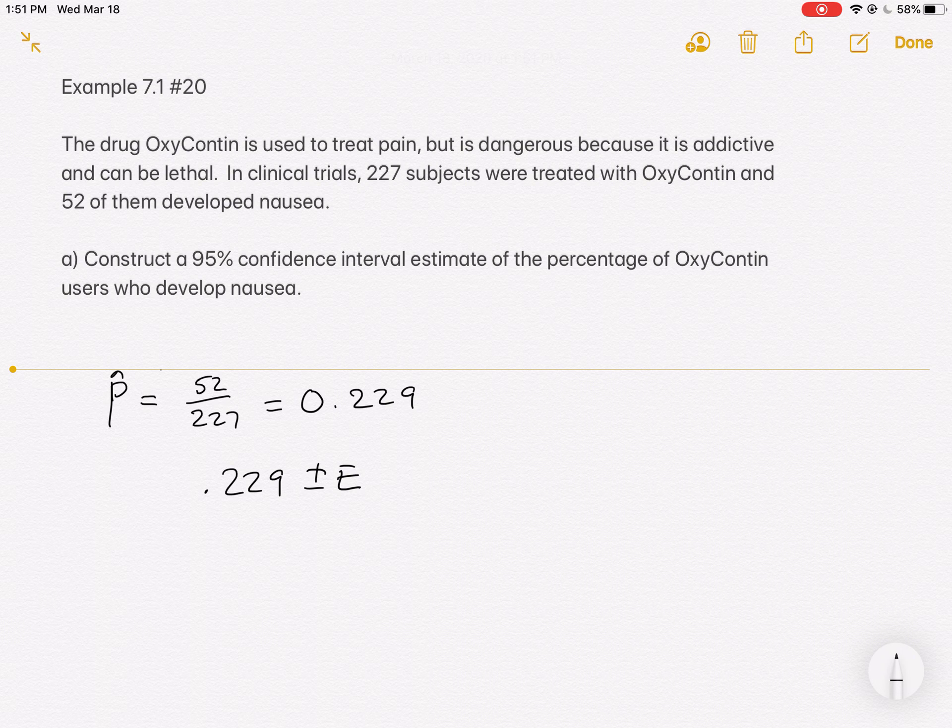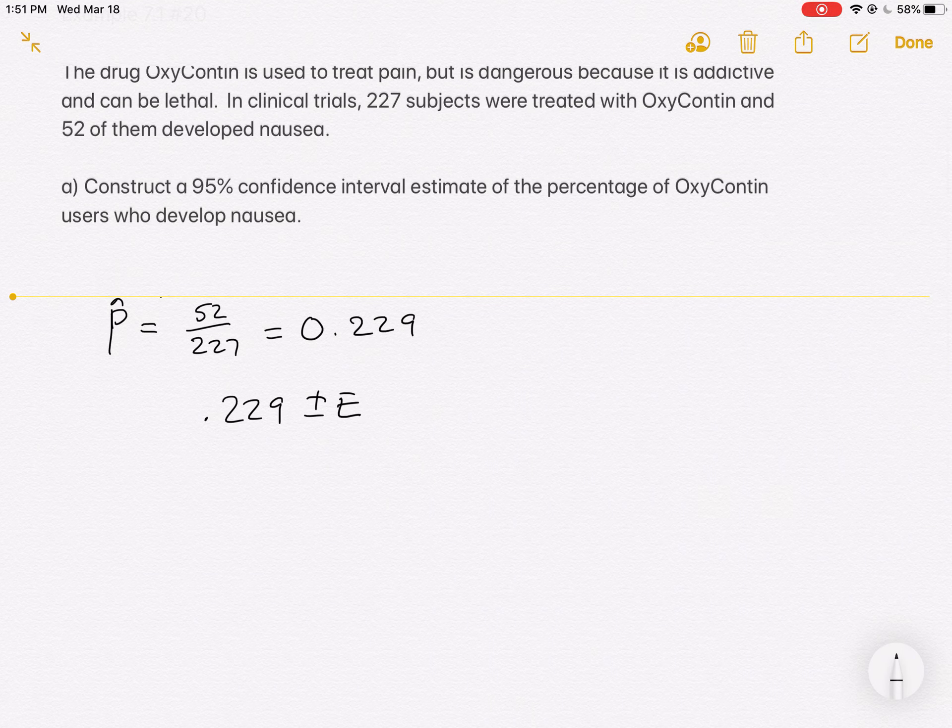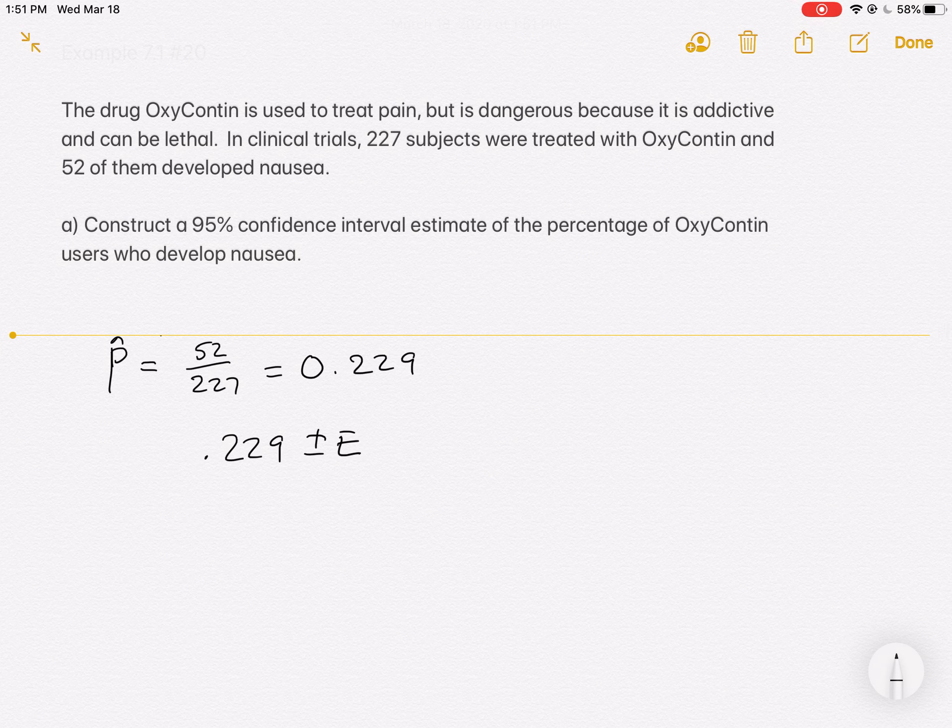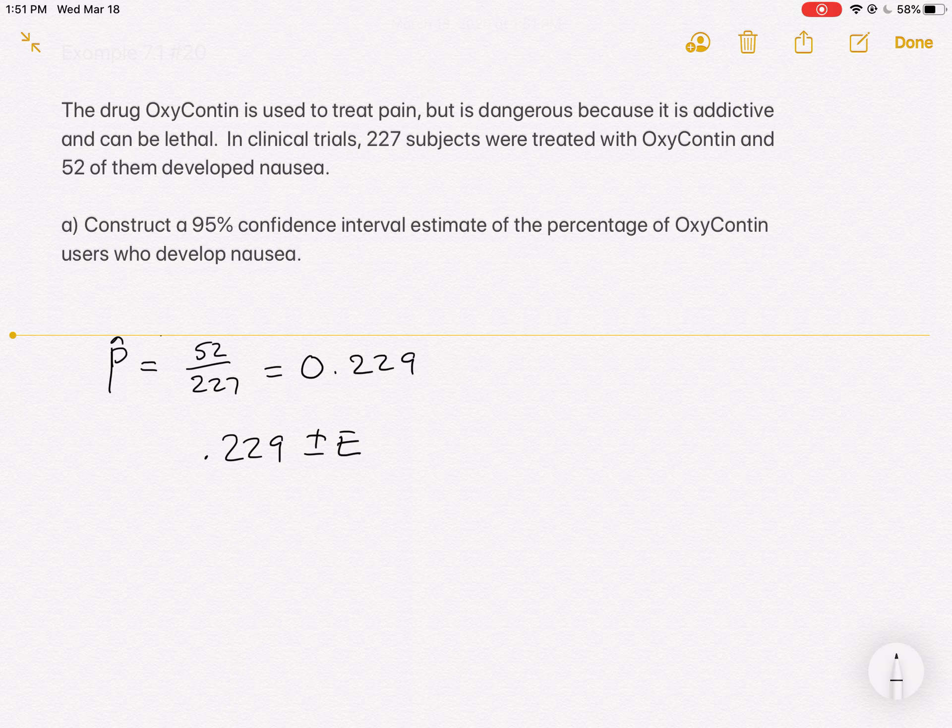But since we know it's not perfect, let's get that window of values where we're 95% confident that the true percentage of all OxyContin users who develop nausea will be in there.